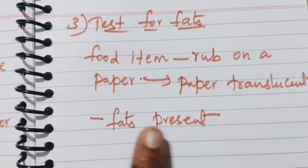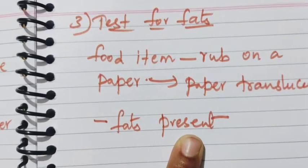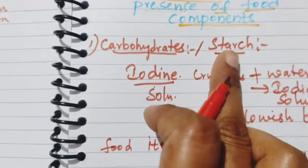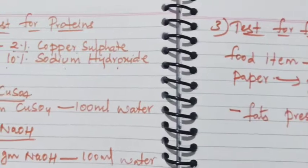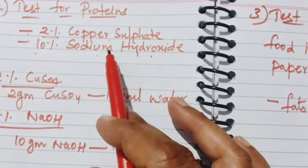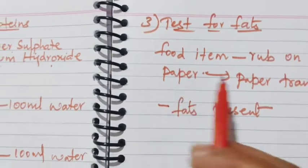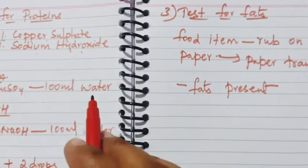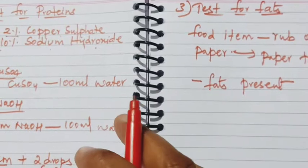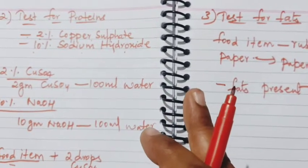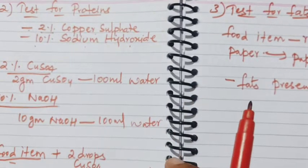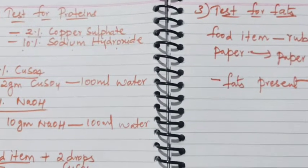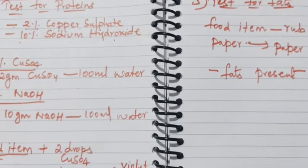In this manner, we can test 3 different food components. For carbohydrates or starch, we need iodine solution. For testing proteins, we need copper sulfate and sodium hydroxide. For fats, the paper changes to translucent. In this manner, we can confirm whether the given food item contains carbohydrates or starch, proteins, and fats. This is the way we do identification tests. Thank you children, keep watching for more videos and please like, share, and subscribe.